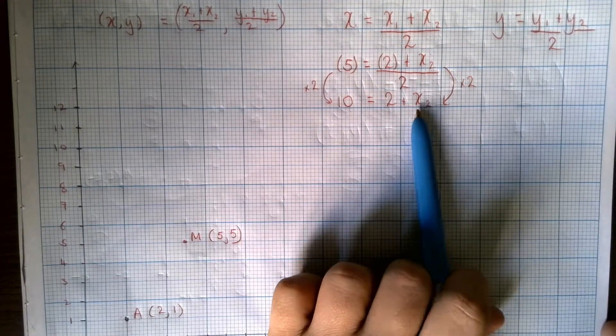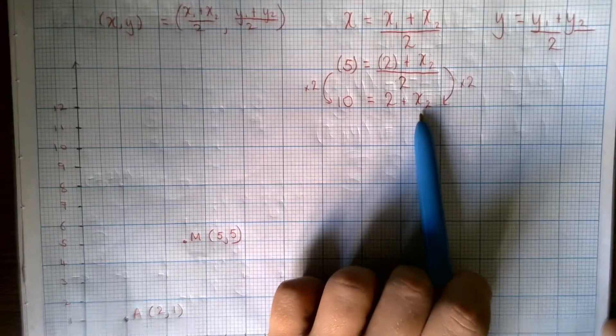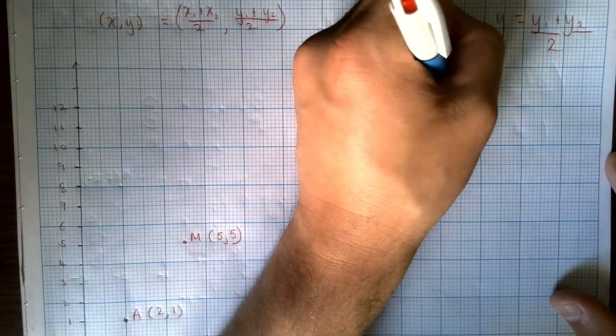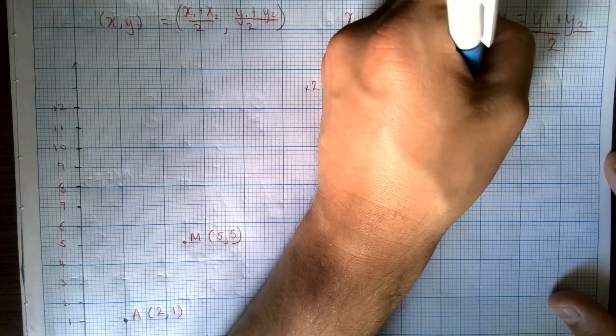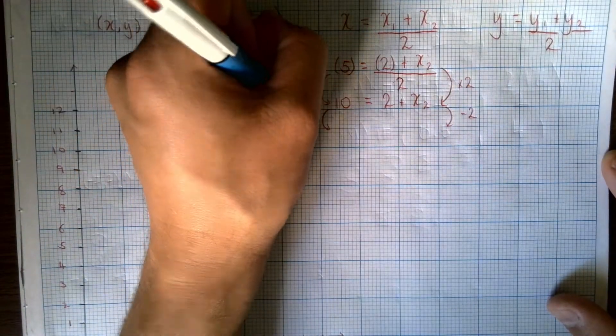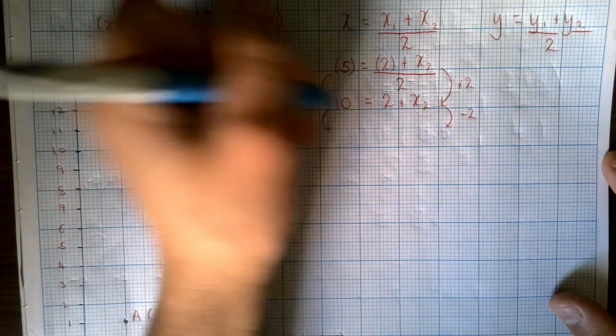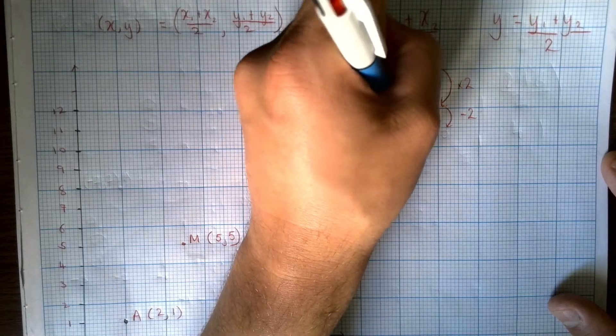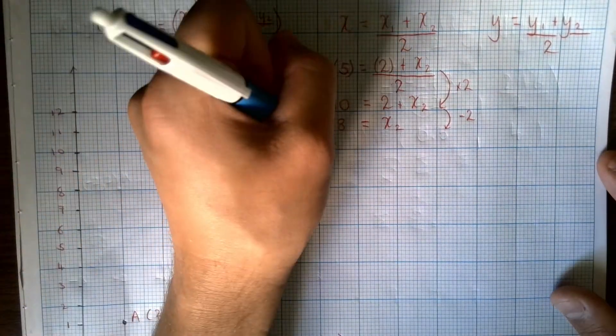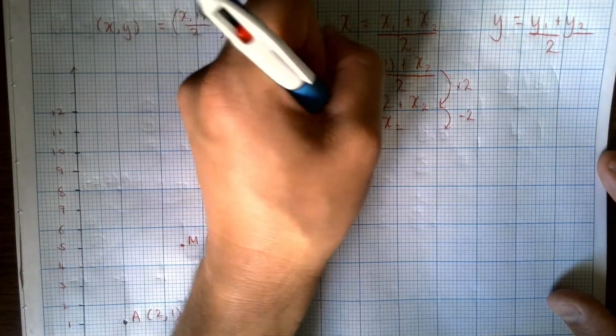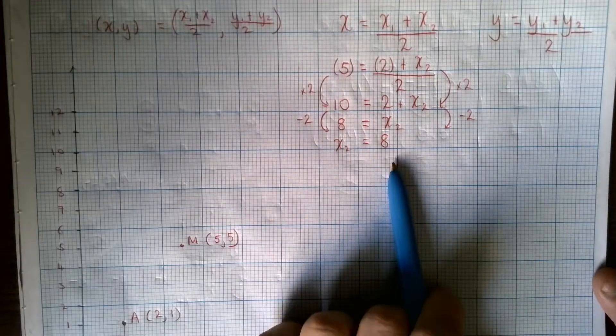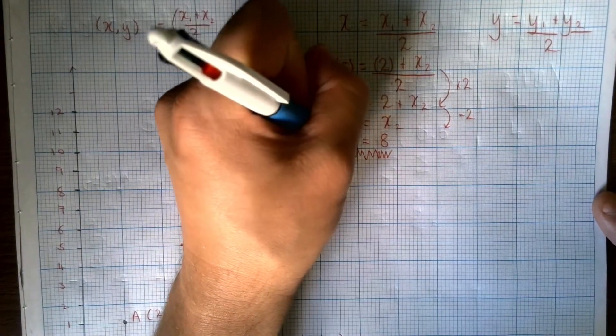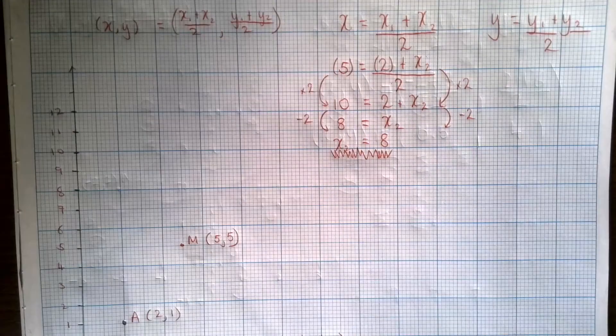So we're nearly there. And remember, we're looking for that missing X coordinate of B, which is this X2. So the final step is I'm going to get rid of the part we know. So we're going to subtract 2 from both sides in order to leave that X2 on its own. So 10 take away 2 is 8. 8 equals X2. I have to rewrite that as X2 equals 8. So we know that the X coordinate for B is 8. And I'm going to underline that with my spiky line to show that's part of my solution.